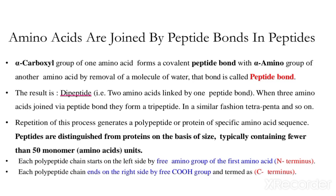If three amino acids join, it is called a tripeptide. Similarly, four would be a tetrapeptide, five a pentapeptide, and so on — the naming increases according to the number of amino acids. Repetition of this process generates a polypeptide and a protein of a specific amino acid sequence. As amino acids continue to join, a large polypeptide chain is formed, and with greater complexity, a full protein structure is generated.